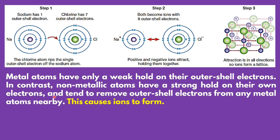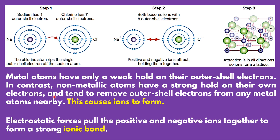Metal atoms have only a weak hold on their outer shell electrons. In contrast, non-metallic atoms have a strong hold on their own electrons and tend to remove outer shell electrons from any metal atoms nearby. This causes ions to form. Electrostatic forces pull the positive and negative ions together to form a strong ionic bond.